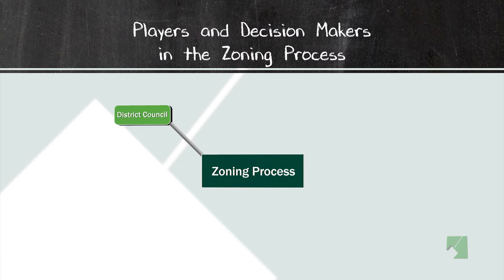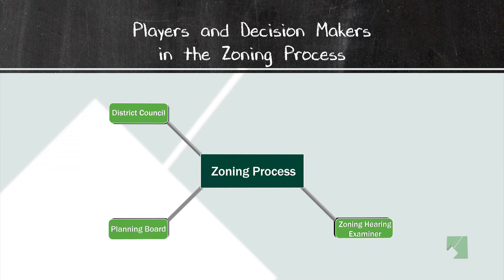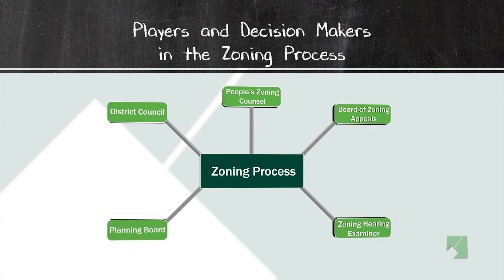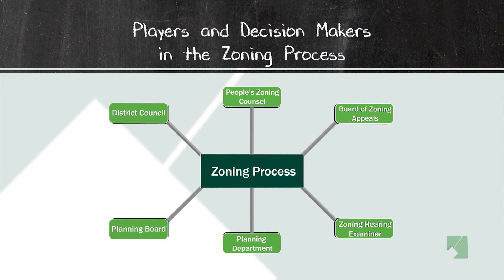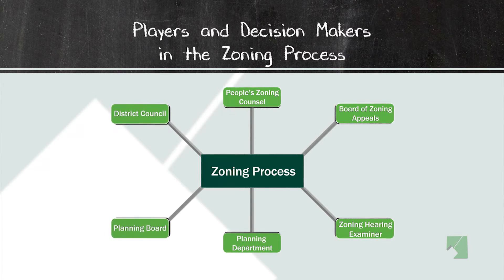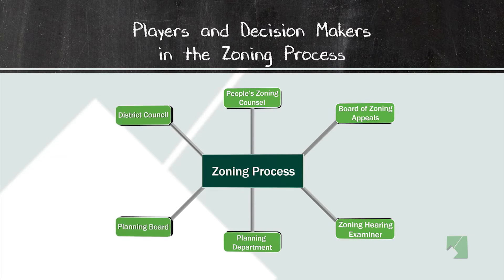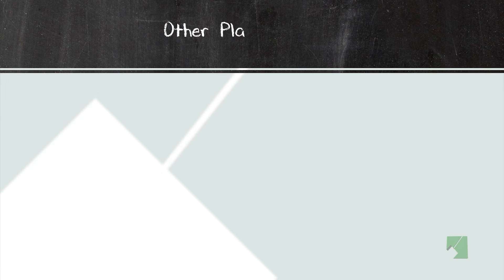These agencies and people have different roles in the planning and zoning process. Some of them are advisory and some of them are approval agencies. All of them work together in order to approve subdivisions and zoning in Prince George's County.